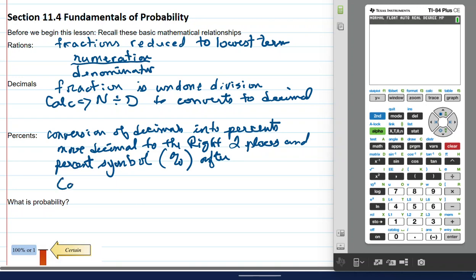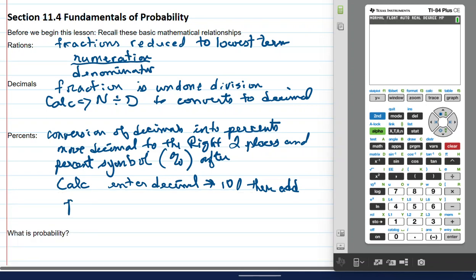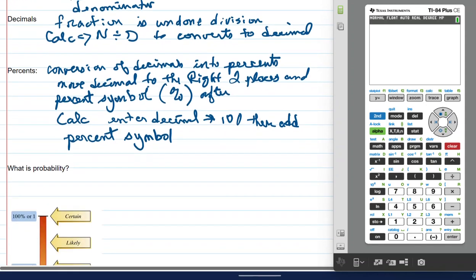Well, sometimes probability is given as a percent, and a percent is a conversion from decimals to percents. Some schools, they say, move the decimal two places and add a percent symbol.